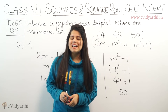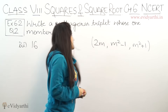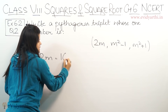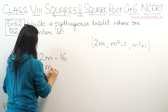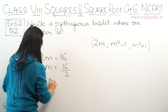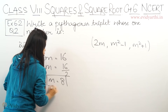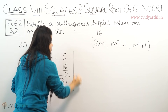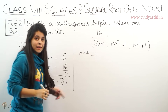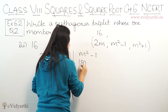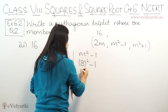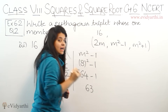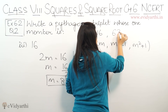This was the second part. Now let's come to the next part. The third part is 16. So let's take 2m equals 16. So m equals 16 upon 2, which means m equals 8. The first number is 16. The second number will be m² - 1, so 8² - 1, which is 64 - 1. So this will be 63. The second number is 63.